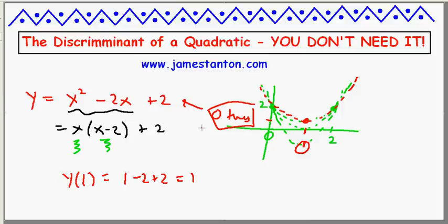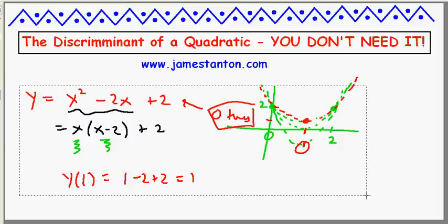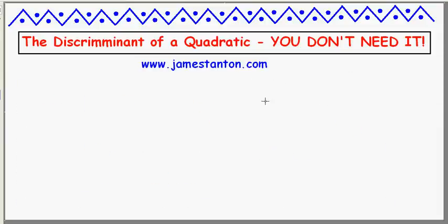Yes, I do admit b squared minus 4ac is quicker, but I'm not interested in speed. I'm more interested in understanding. Let's try another one. Maybe that makes me a weird algebra teacher.